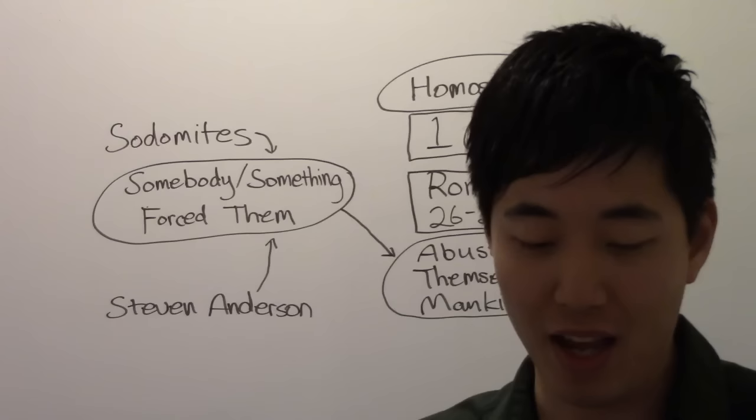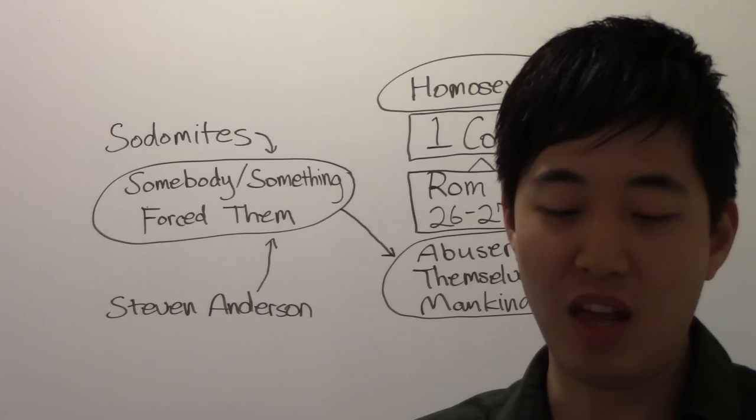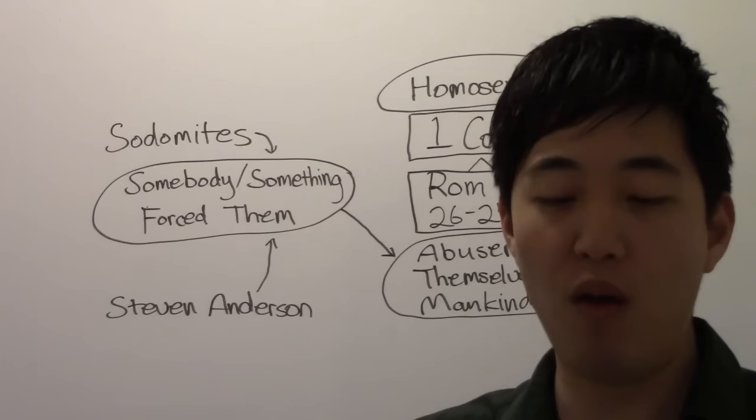Verse 27: And likewise also the men, leaving the natural use of the woman, burned in their lust one toward another, men with men, working that which is unseemly, and receiving in themselves that recompense of their error, which was meet.